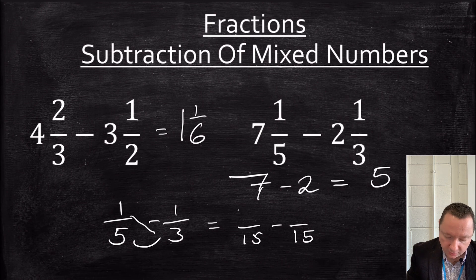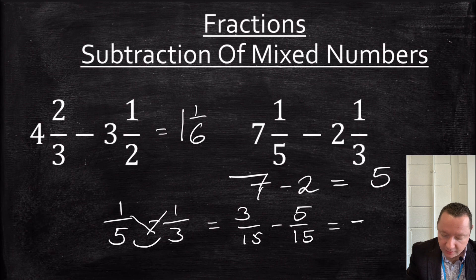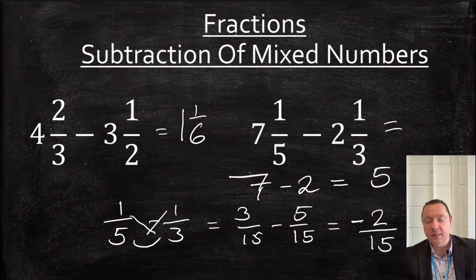1 times 3 is 3. 1 times 5 is 5. Notice this time, I get 3 fifteenths minus 5 fifteenths. So the answer I get is a negative answer, minus 2 over 15. So if I want to put that together, I've got 5, take away 2 fifteenths. So I drop down to 4.